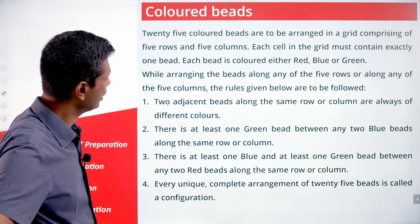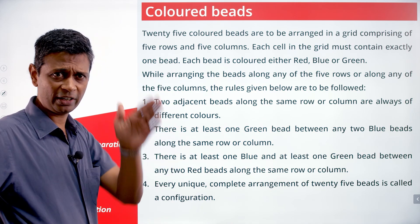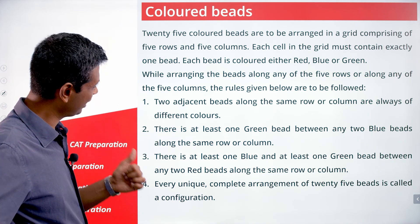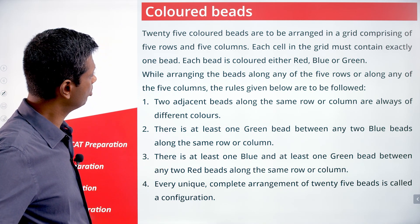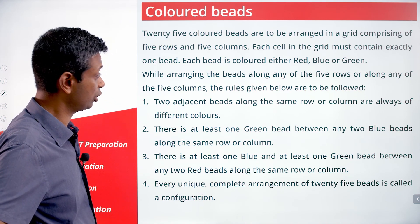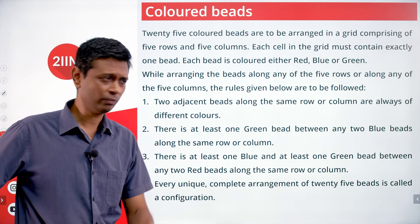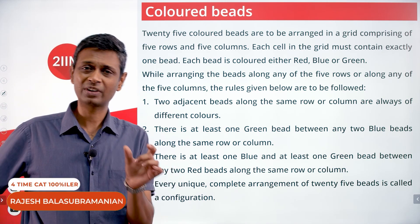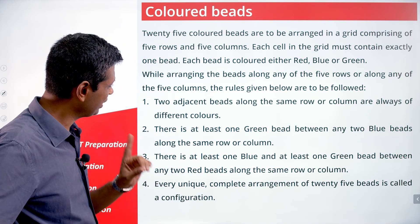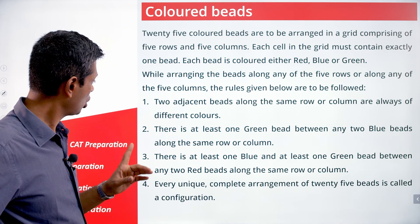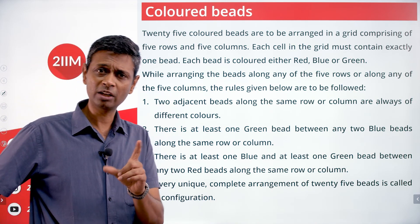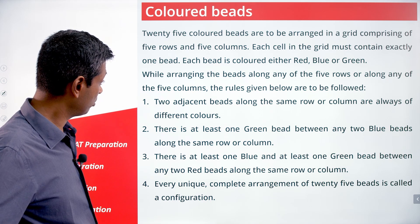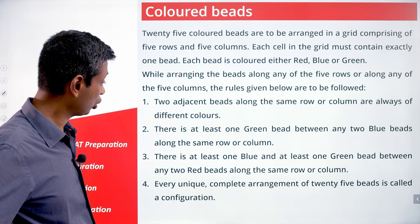25 colored beads are to be arranged in a grid comprising 5 rows and 5 columns — a 5 by 5 grid. Each cell must contain exactly one bead. Each bead is colored either red, blue, or green. The rules to be followed when arranging beads along any row or column are: two adjacent beads along the same row or column are always of different colors — no green-green or blue-blue next to each other. There must be at least one green bead between any two blue beads along the same row or column. And there must be at least one blue and at least one green between any two red beads along the same row or column.